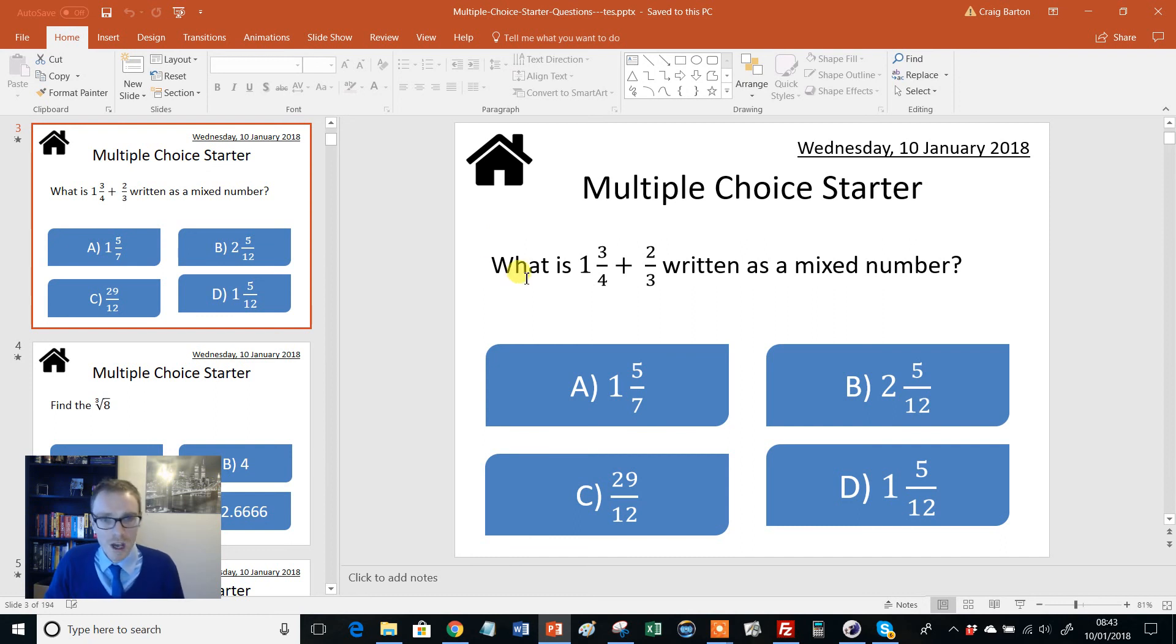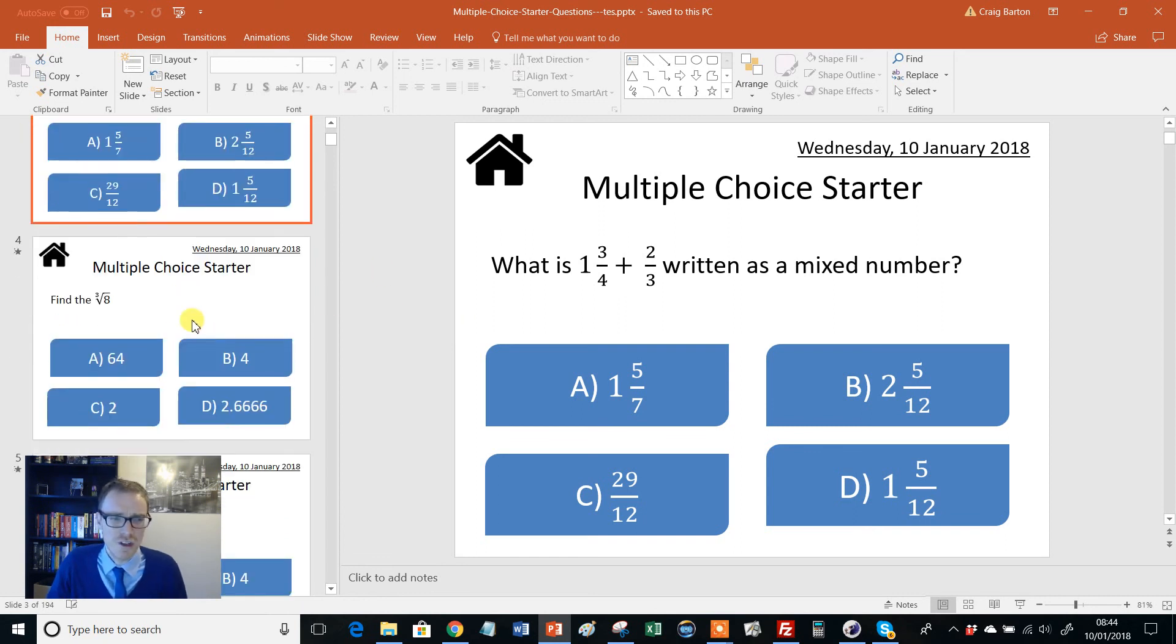Kids are doing working out in books and so on. But the idea is you bang this up on the board, give the kids a bit of thinking time. They then vote either with the fingers or the mini whiteboards. You have a look around, see all the responses. I then tend to get kids to explain why they've chosen it. So why did you choose A? Why did you choose B? Why did you choose C? Why did you choose D? Then have a class re-vote and a discussion if need be. And within the space of, say, two minutes, you've revised a key concept, had a great discussion, exposed any misconceptions.